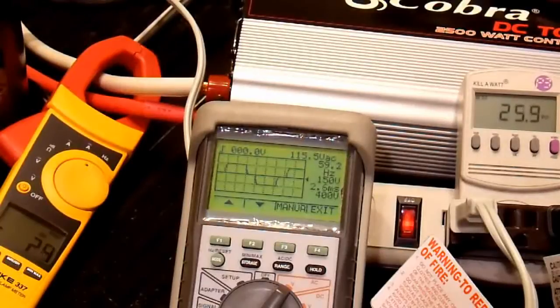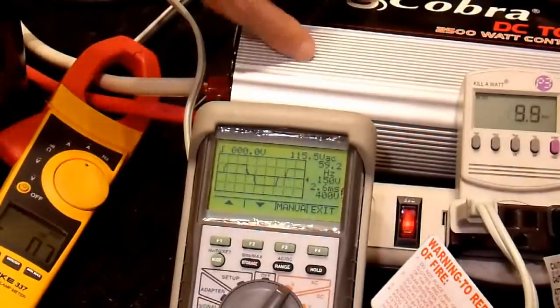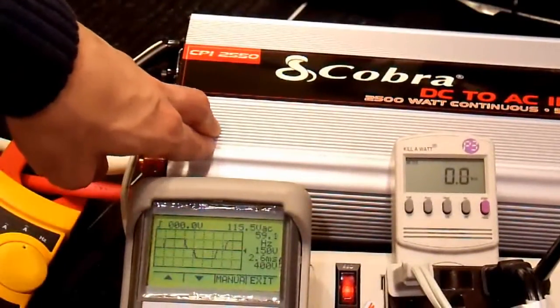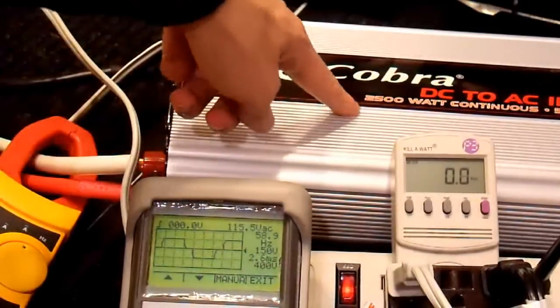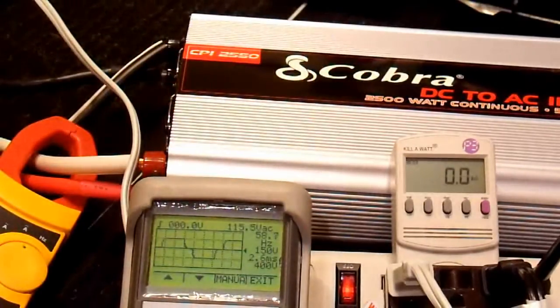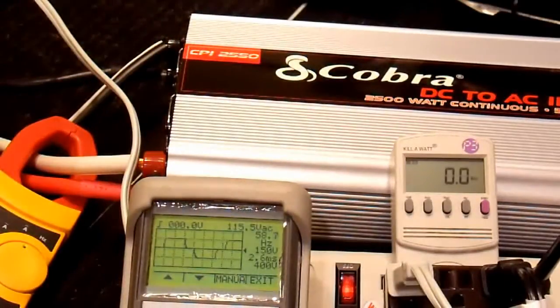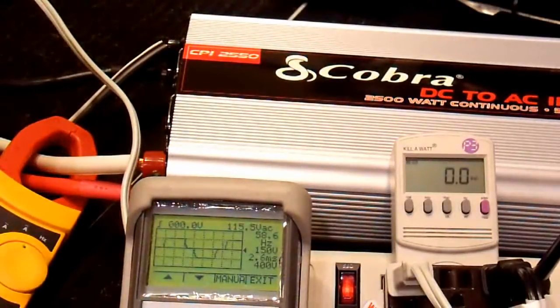And I'm also not able to test the current limit on here, the output current limit, because I can't get to 2500 watts. That also means that the surge capability is going to be somewhat limited to around 2000 watts. Also, since it's continuous output power, I can't get above that.